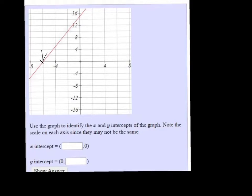It looks like it's skipping, it's going 2, 4, negative 2, negative 4, negative 6, so that would be the point negative 6, 0.